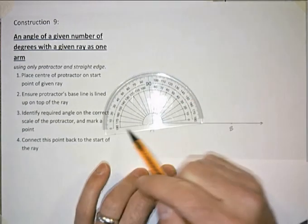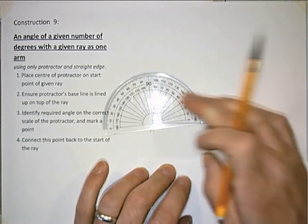Secondly there's that line along the bottom there and we need that line to be in line with my given ray.